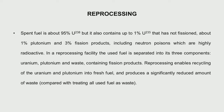The spent fuel is about 95% uranium-238, because not all uranium-238 gets converted to plutonium. It also contains about 1% uranium-235 which has not fissioned, 1% plutonium, and about 3% fission products, besides neutron poisons like xenon which are highly radioactive. In reprocessing, we separate these components: uranium, plutonium, and waste containing fission products. Based on the reprocessing output, we can use the uranium and plutonium in fresh fuel, effectively reducing waste.